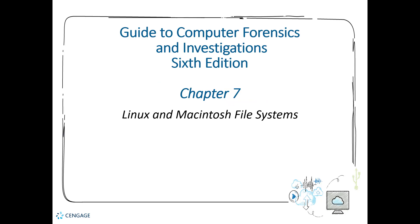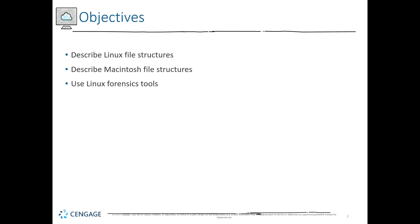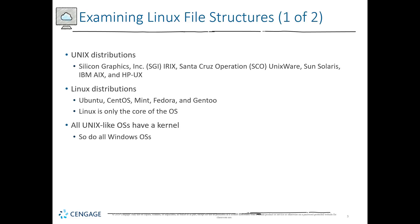Chapter 7: Linux and Macintosh file systems. We're going to be looking at these two specific machines — the Linux file structure and the Mac file structure. We're also going to be looking at generically using Linux forensics tools, which means we need to examine the Linux file structure.